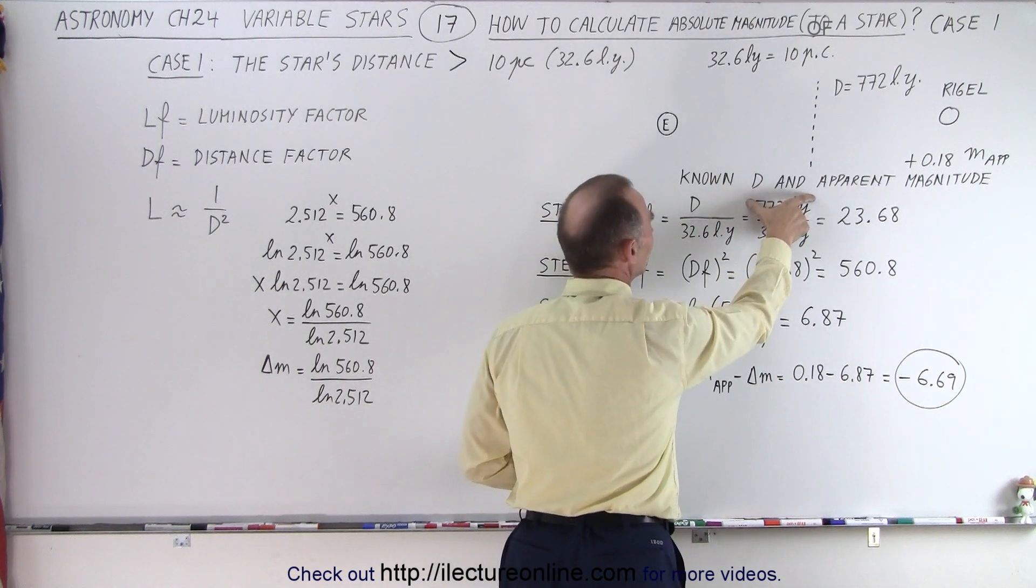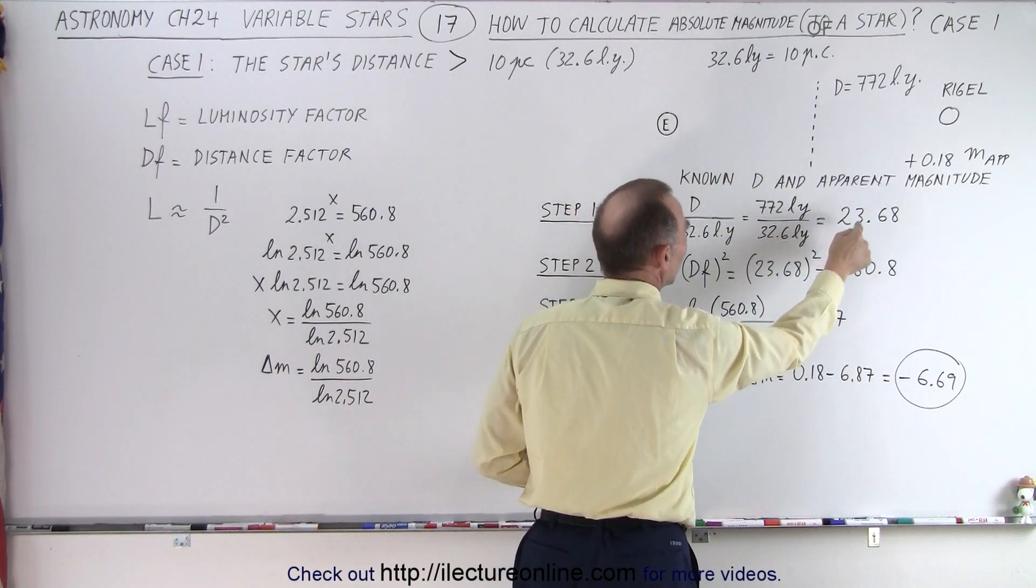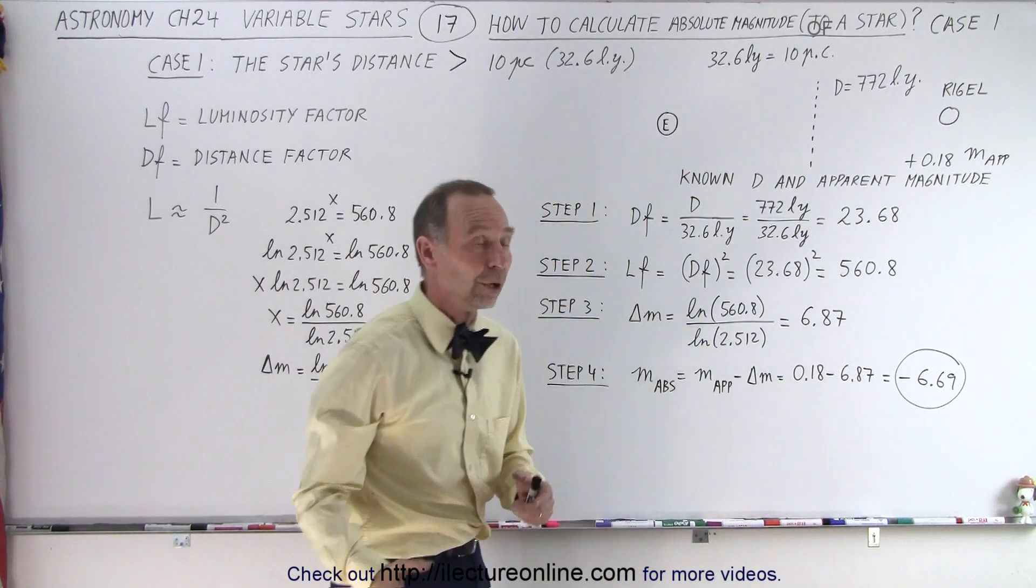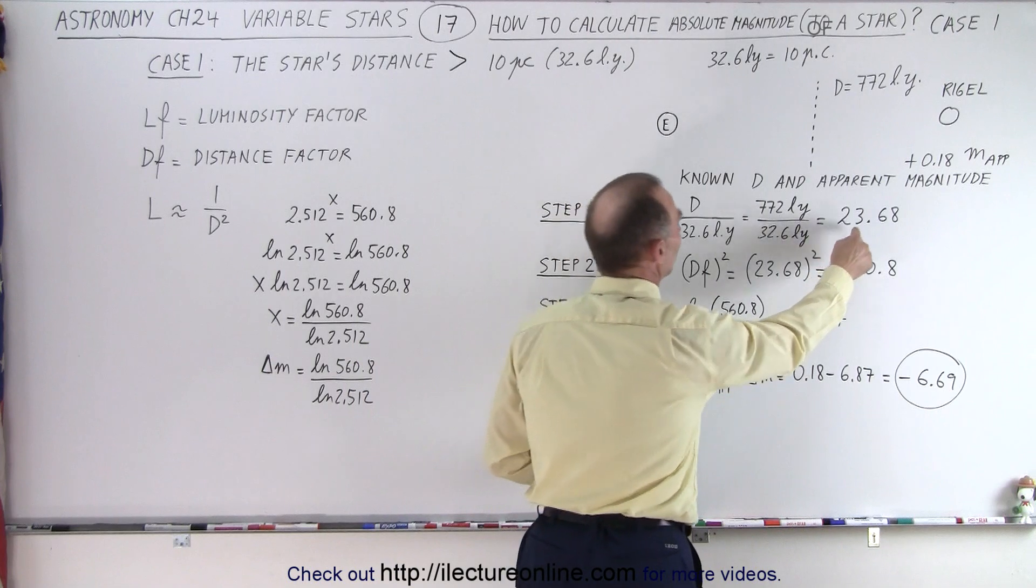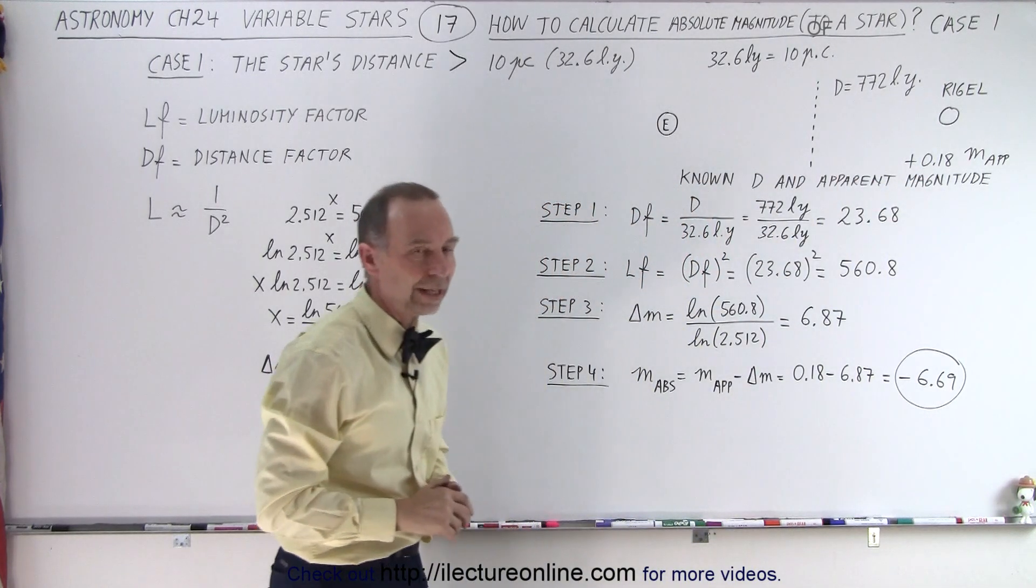So the distance to Rigel, which is now a known quantity, divided by 32.6, which is the standard distance, gives us the distance factor. In other words, Rigel is 23.68 times farther away than 10 parsecs, or 32.6 light years.